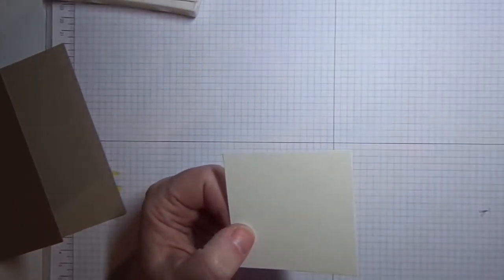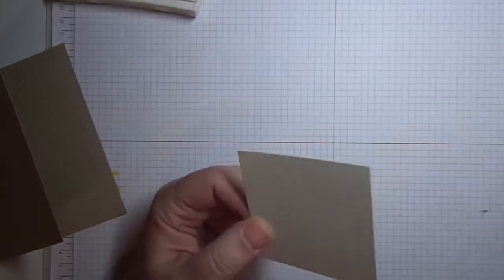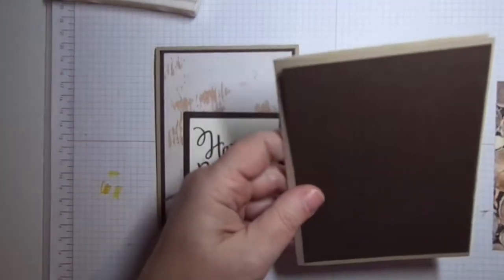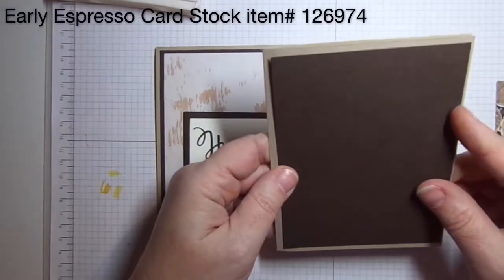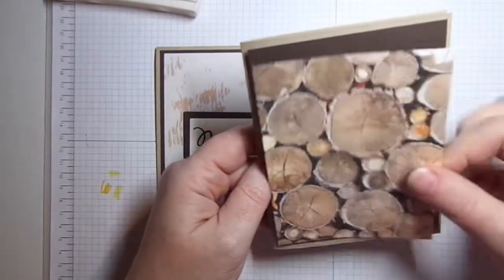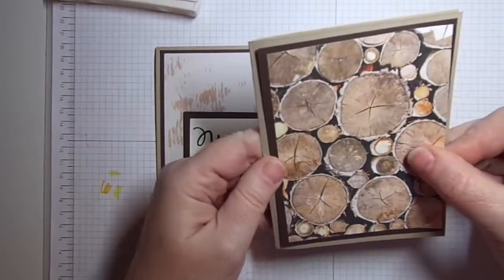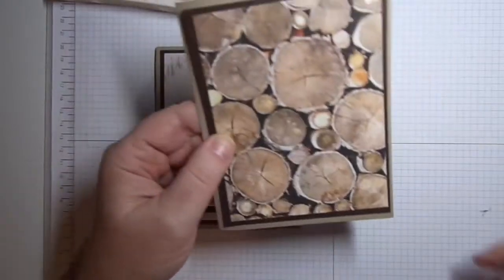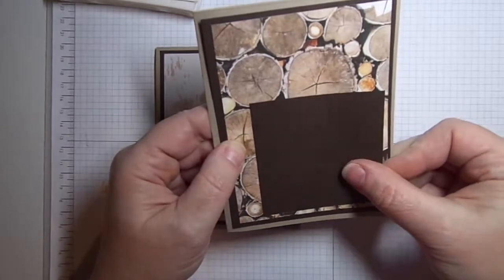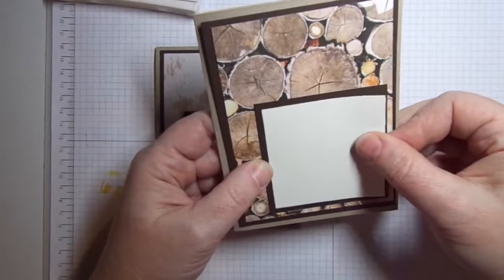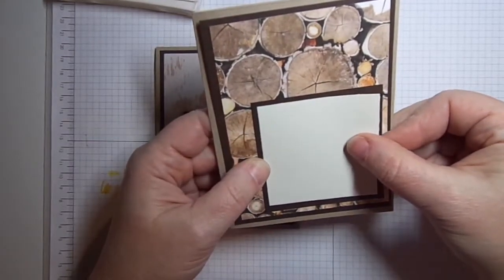Let me pull that in for you to see. So we talked about the base, then we have the first layer which is early espresso and that's four by five and a quarter. Then I have a cut of our designer series paper. I have a piece of that that I have cut to three and three quarters by five inches. This piece of early espresso is three by three, and this piece of very vanilla is two and three quarters by two and three quarters.